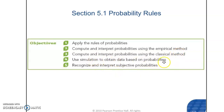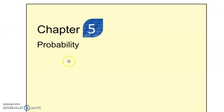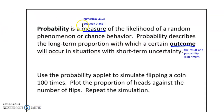We'll also cover using simulation to obtain data — I'm going to show you a couple of different simulators online — and then recognize and interpret subjective probabilities, which we'll be talking about at the end of the lesson. Probability is a measure between 0 and 1, 0 being an impossible event and 1 being certain, of the likelihood of a random phenomenon or chance behavior.